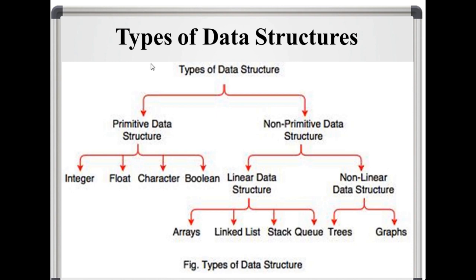There are different types of data structure: Primitive data structure and non-primitive data structure. Primitive data structure means it can hold only single value. Non-primitive data structures are derived from primitive data structure.